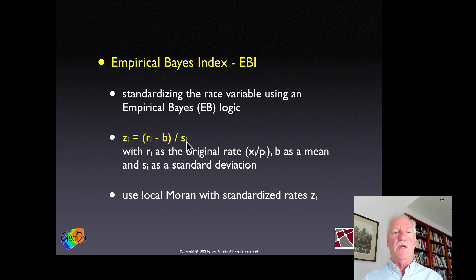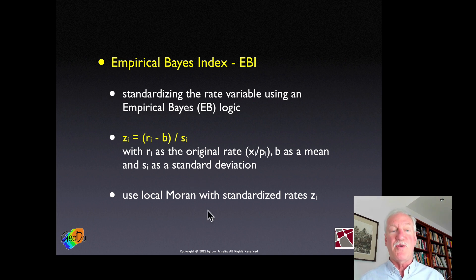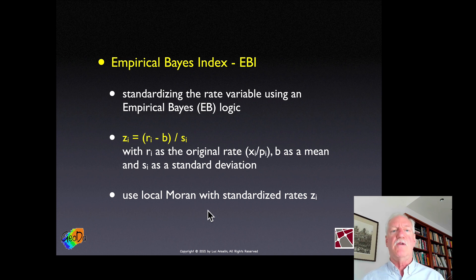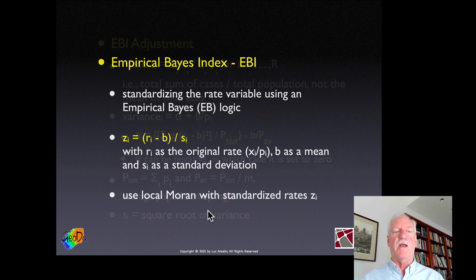The principle is simple: we take the crude rates, transform them using the EBI adjustment, and then apply the standard local Moran to the transformed rates — the EBI rates. In the GeoDa context, we call this the Local Moran EBI.